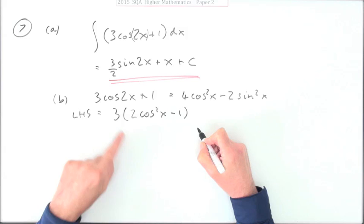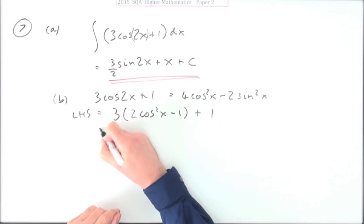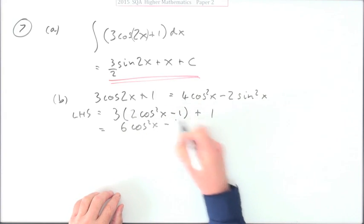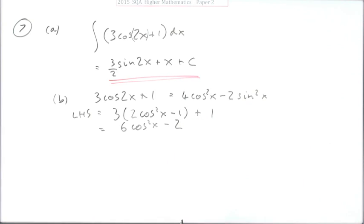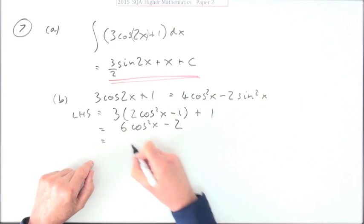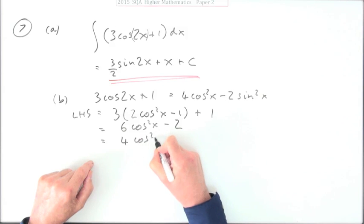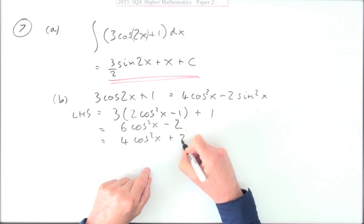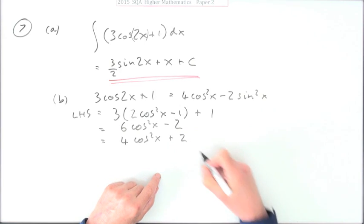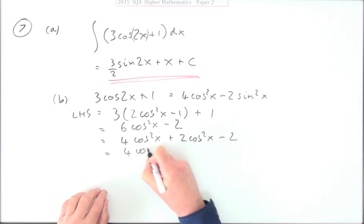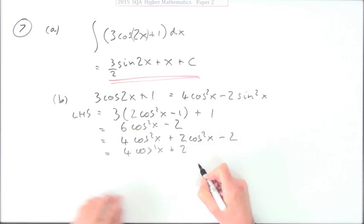So that can be replaced by that plus 1, so that gives me 6 lots of cos squared x minus 3 plus 1 which is minus 2. Now look at this and think there's only 4 of them here, so an obvious step would be I'll just keep 4 of them and get rid of the other 2. So I've still got another 2 lots of cos squared x. I've got 4 cos squared x plus 2 lots.